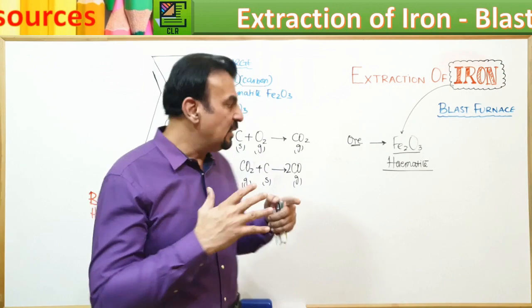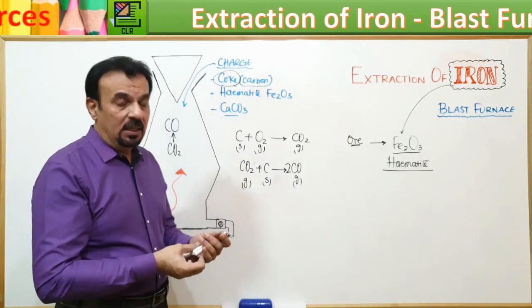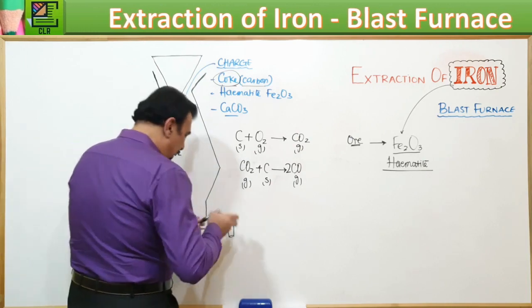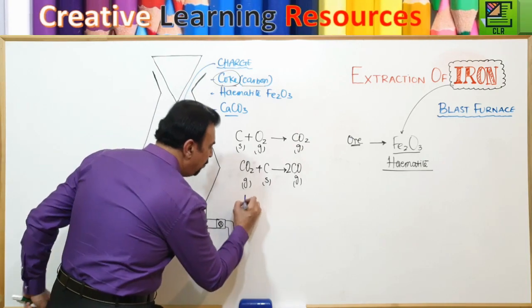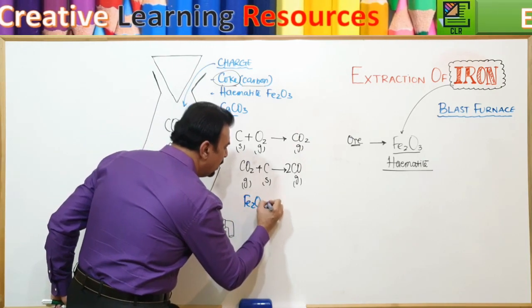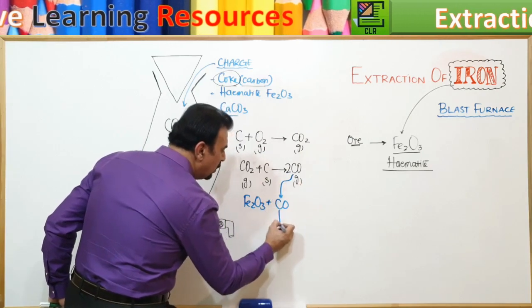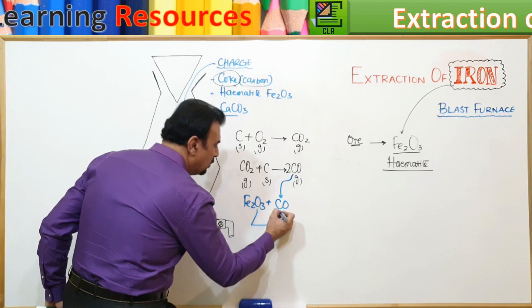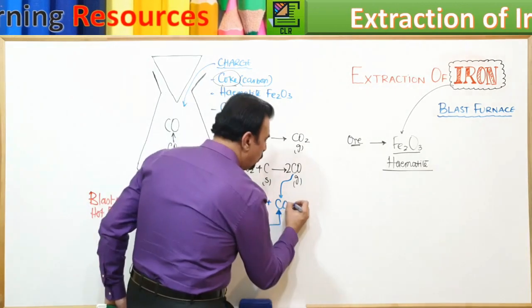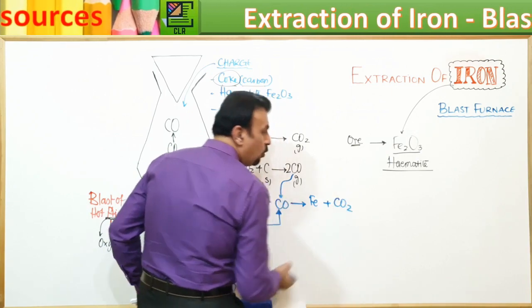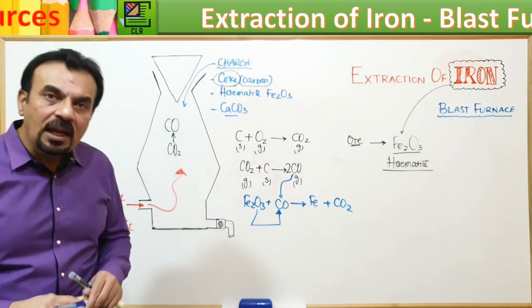This carbon monoxide is going to react with the hematite. And then what is the chemical reaction? Fe2O3 is reacting with the carbon monoxide. Carbon is going to pull out this oxygen. As a result of it, the iron is going to get separated and we are going to get carbon dioxide.